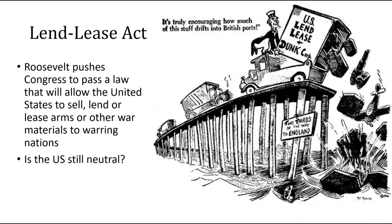That doesn't work out so well. Britain runs out of money and ships to send over. So Roosevelt pushes Congress to pass the Lend-Lease Act, allowing the United States to sell, lend, or lease arms or other war materials to warring nations. At this point, if we're essentially supplying Britain, are we still neutral? That's a big question to think about. A Dr. Seuss cartoon comments: 'It's truly encouraging how much of this stuff drifts into British ports' — noting that German submarines, similar to World War I, are destroying a bunch of military supplies and sending them to the bottom of the ocean.